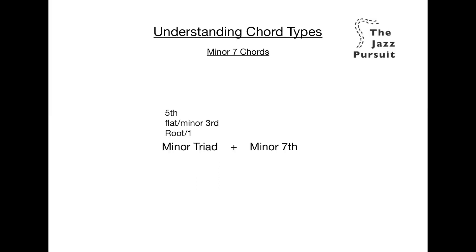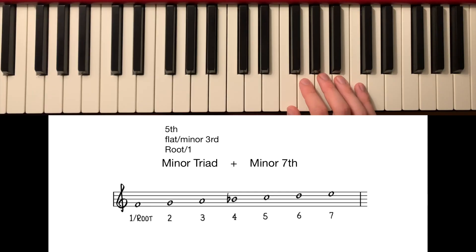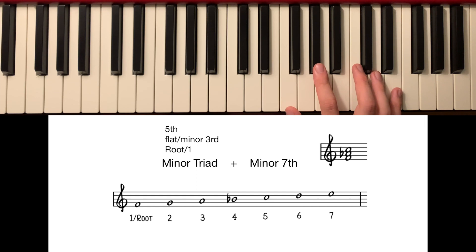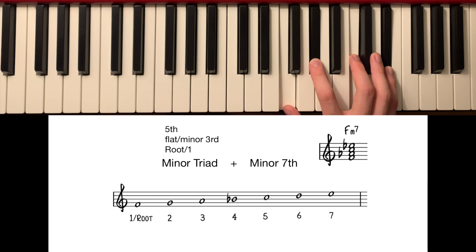Now let's try it in a different key — how about F? Here's our F major scale, which has a B flat in it. To make our F minor 7 chord, we need to first find the minor triad, the root, flat 3rd and 5th. This is F, A flat — because we flattened the major 3rd A to get a minor 3rd A flat — and C. Now we need to find the major 7th and flatten it to get our minor 7th. The major 7th is E, so we flatten this to turn it into our minor 7th, E flat. Therefore, our F minor 7 chord consists of the root F, minor 3rd A flat, 5th C and minor 7th E flat.